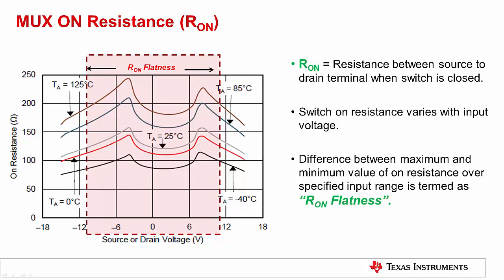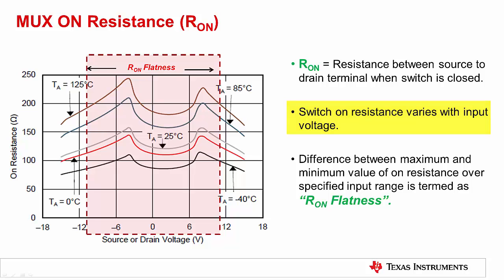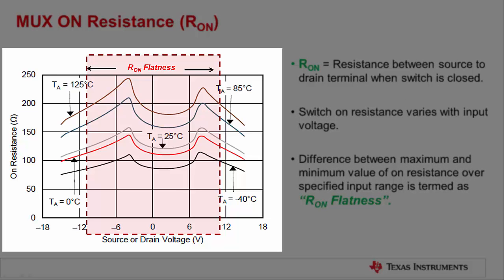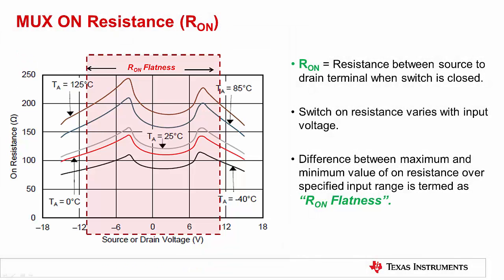Now let's discuss the first important parameter of multiplexers. Switch on resistance is the resistance between the source pin and drain pin when the switch is closed. As discussed earlier, switch on resistance varies with input voltage. The difference between the maximum and minimum value of on resistance over a specific input voltage range is termed as R_ON flatness. The R_ON flatness specification, as well as the on resistance versus drain-to-source voltage curve, is given in the datasheet. The typical R_ON curve for the MUX36S08 device is shown here. Greater R_ON values will introduce larger gain errors. Also, larger R_ON values create an offset voltage error when leakage current flows through the MUX. Finally, depending on the circuit configuration, R_ON modulation with input voltage can introduce variations in gain error, which produce signal-dependent distortion.